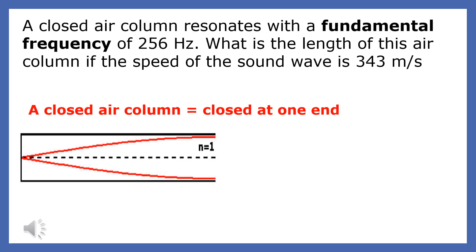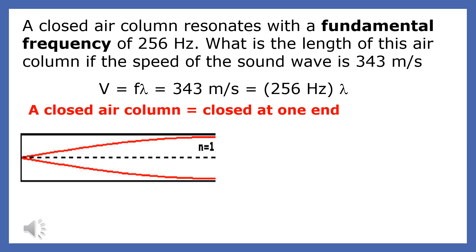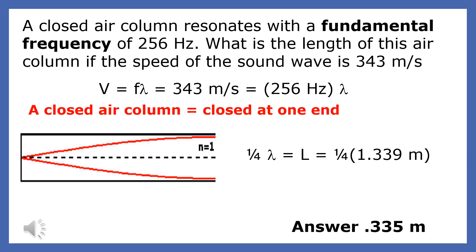Let's try an example problem. A closed air column resonates with a fundamental frequency of 256 Hz. What is the length of this air column if the speed of the wave is 343 meters per second? We use the velocity equation to find the wavelength. The wavelength turns out to be 1.339 meters, and the length of this tube is a quarter of a wavelength, so a quarter of 1.339 is 0.335 meters.